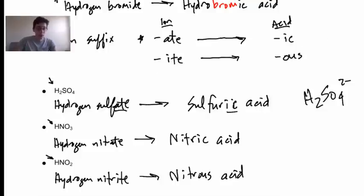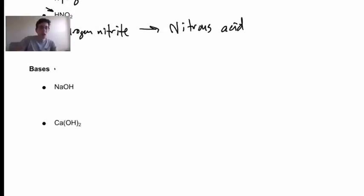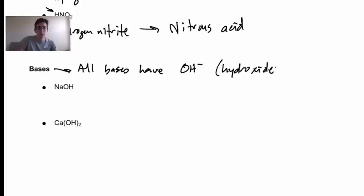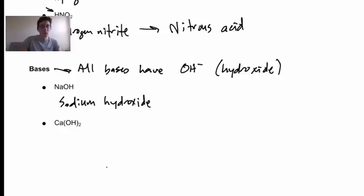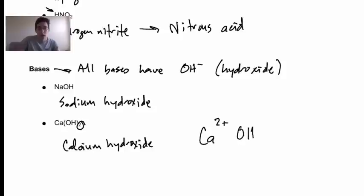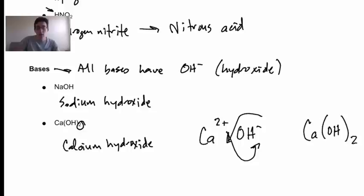For polyatomics, you need to know your -ates versus -ites to name them -ic versus -ous. Bases are a little easier — all bases have the hydroxide ion (OH⁻). We treat these exactly the same as polyatomics; the cation always keeps its name. So NaOH is sodium hydroxide. Ca(OH)₂ is calcium hydroxide — calcium is a 2+ ion, so we need two hydroxide (1−) ions to be electrically neutral.